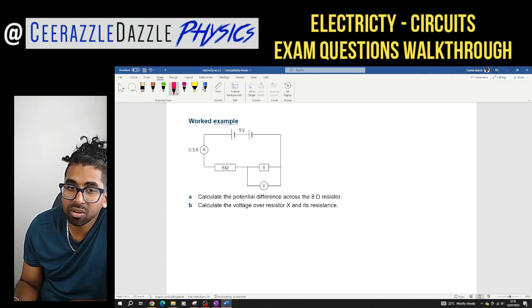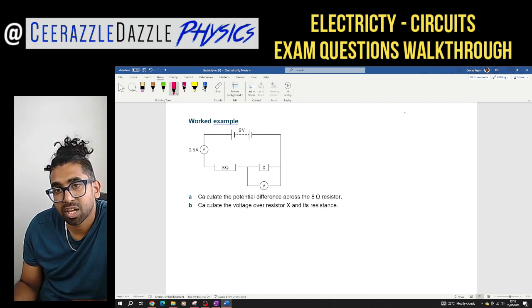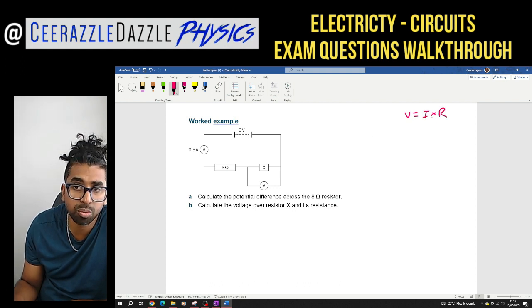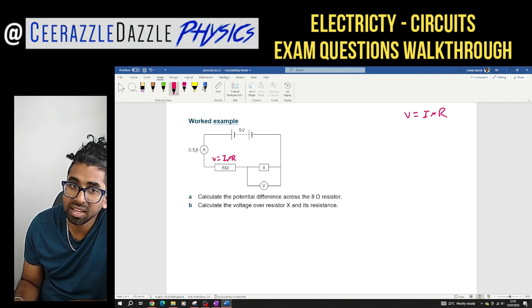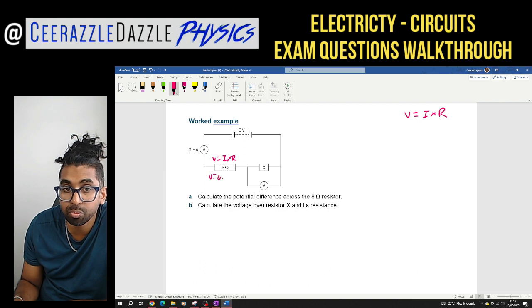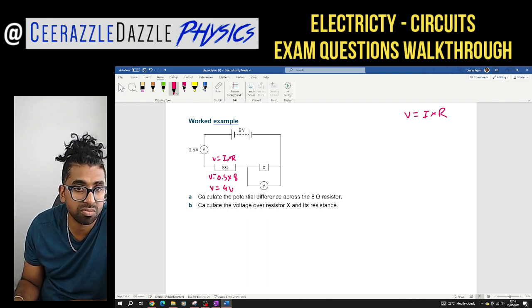First one, calculate the potential difference across the eight ohm resistor. Hopefully you remember that voltage equals current times resistance because it's a fixed resistor. Therefore we can use Ohm's law equation. V equals I times R. Do I know the current which is represented by I? Yes, it's 0.5. So V equals 0.5. The resistance is 8. Yes, because R stands for the resistance. It's going to be 8. So yes, the voltage across here is going to be 4 volts. Easy stuff.